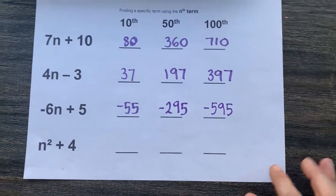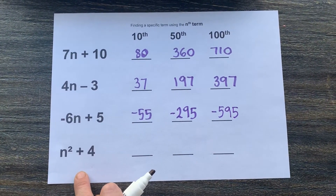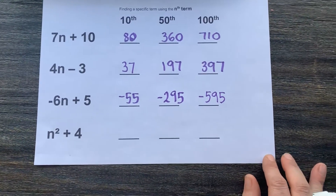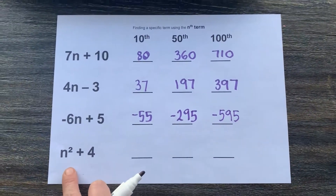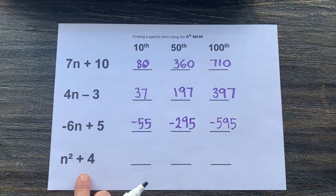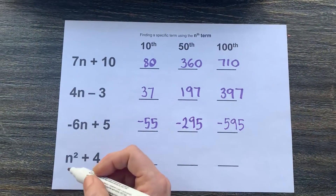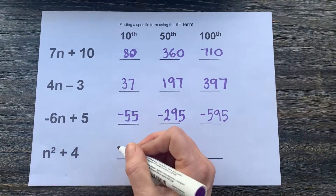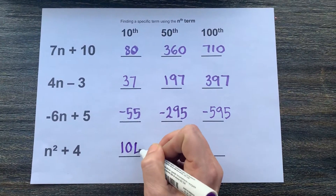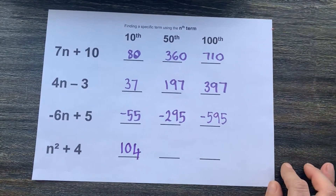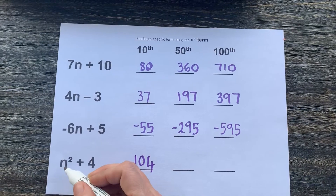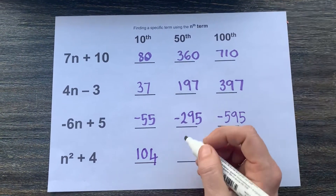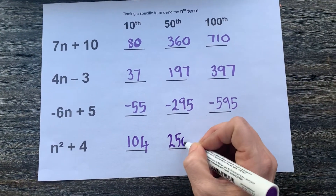We also looked this week at nth term expressions that involved squaring. These are called quadratic equations. So if we look at n squared plus 4, to find the 10th term for that sequence, the value for n would be 10. 10 times 10 is 100, add the 4 would give us 104. To find the 50th term for this sequence, the value for n would be 50. 50 times 50 would be 2,500, plus the 4 would give you 2,504.